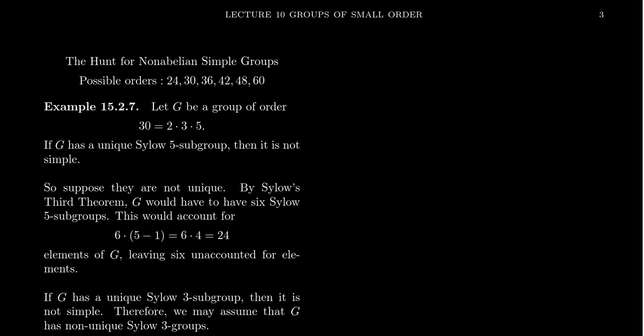In this video, we're going to continue our hunt for non-abelian simple groups. We know there is a non-abelian simple group of order 60. It's, in fact, A5, the alternating group. And we're trying to argue that there is not one smaller than that. No non-abelian simple group, of course.